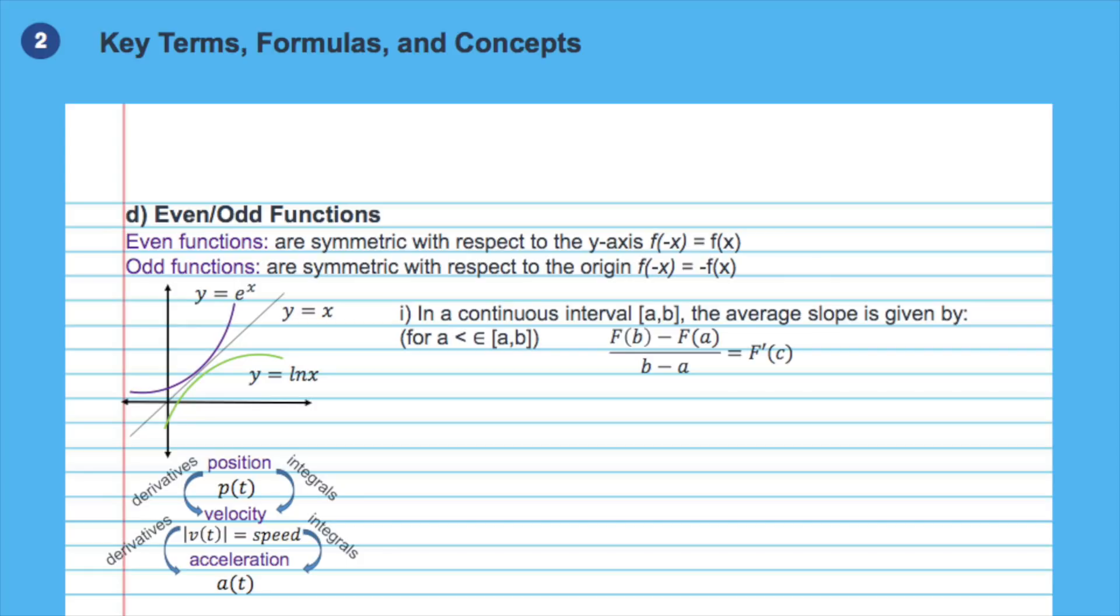To find the average slope in a continuous interval, use the formula given. Remember that c does not have to be right in the middle of the closed interval from a to b, but it has to be in that interval.